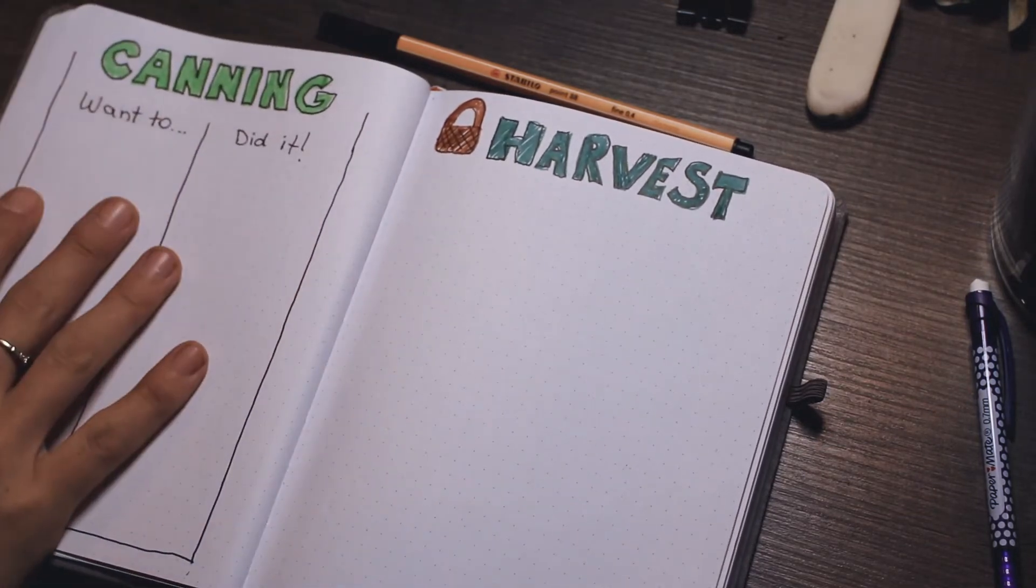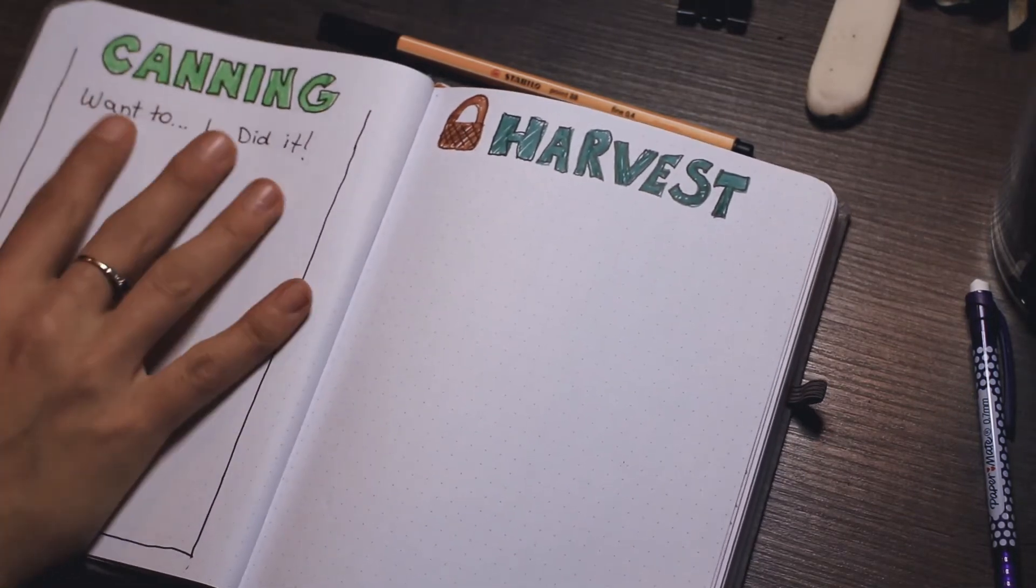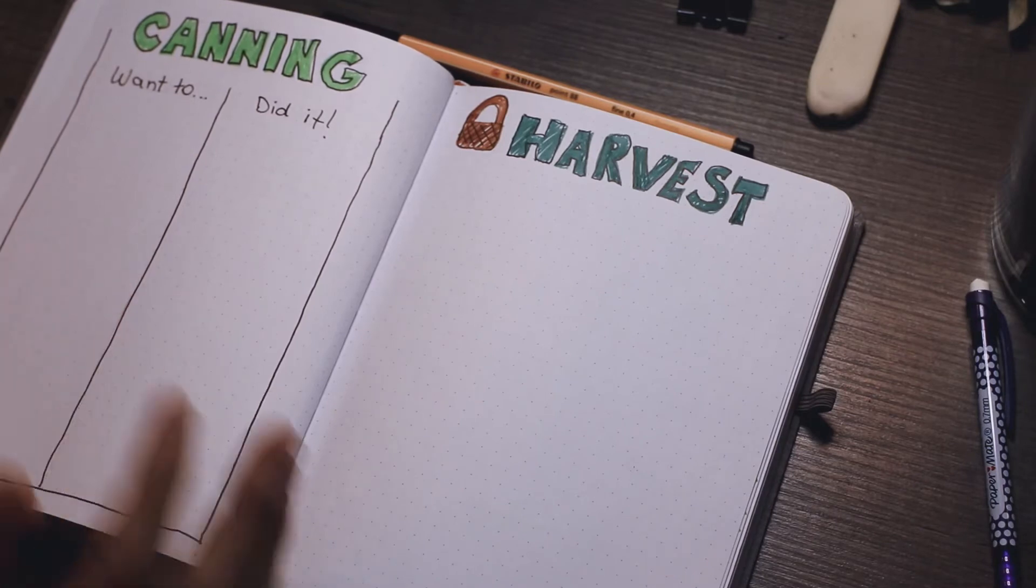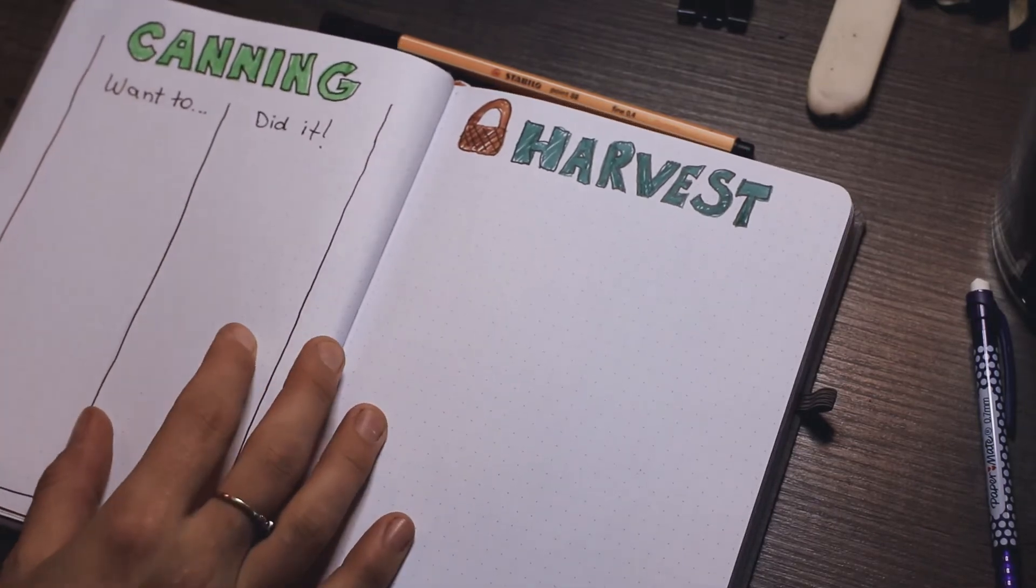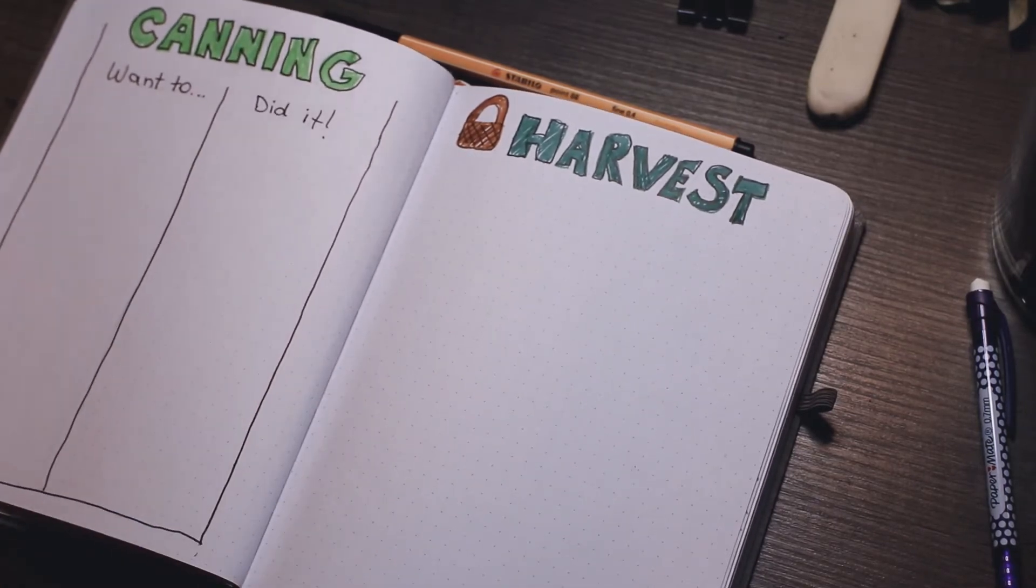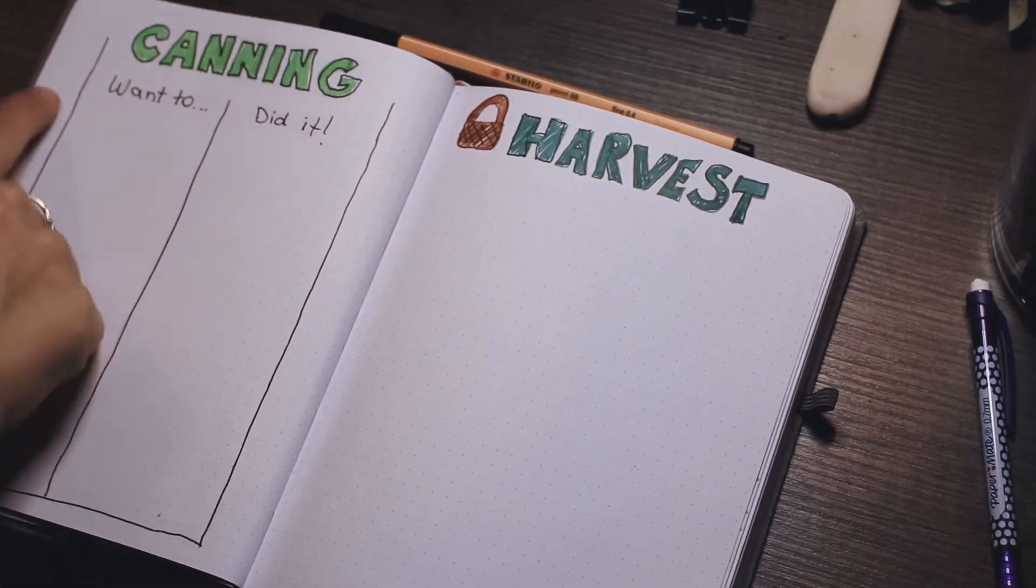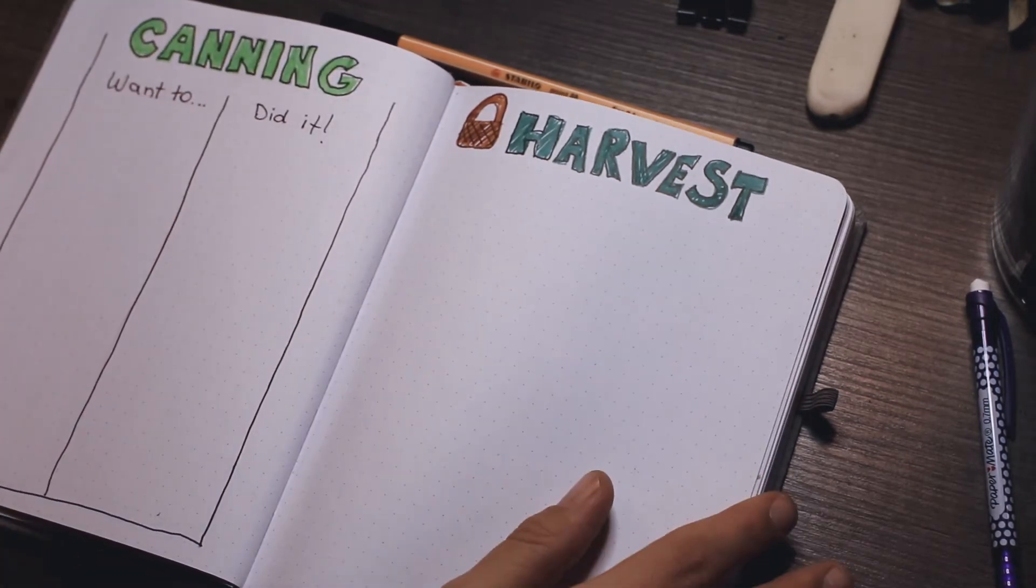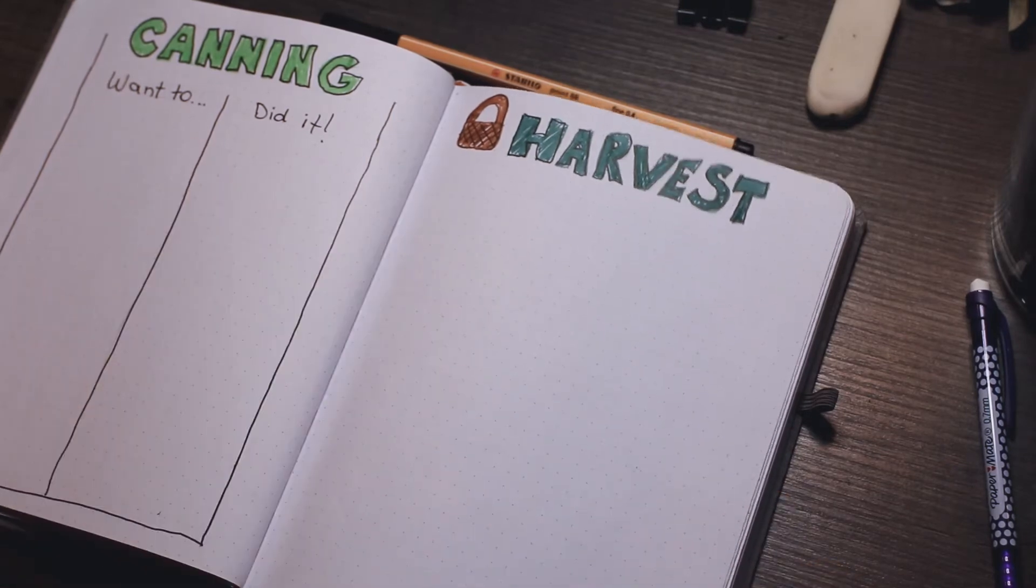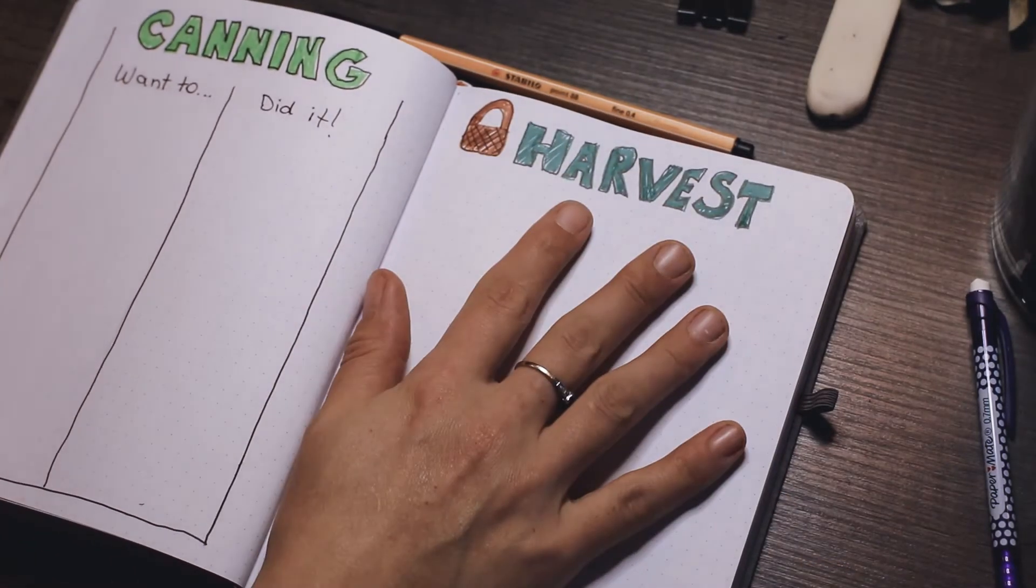For canning, I have so many things in my head that I want to do and my girlfriend says whoa hold up on the projects. So this is what I actually did. Even if I write what I want to do, it never becomes what I actually did do, and my harvest.